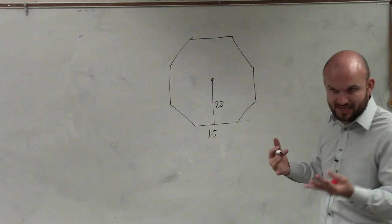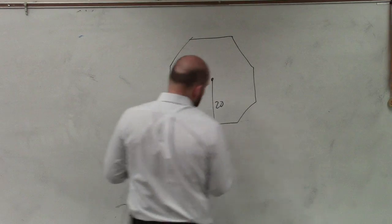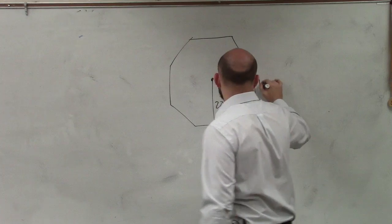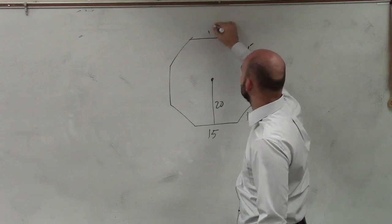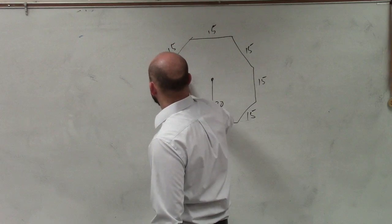And in this case, it's an octagon because it has eight sides. So if the length of this is 15, all of these sides are 15. Would everybody agree with me on that? Yeah, OK.